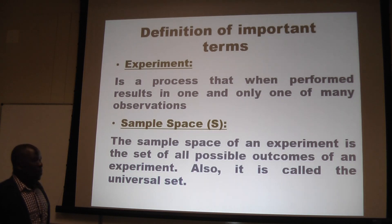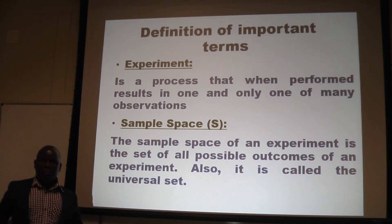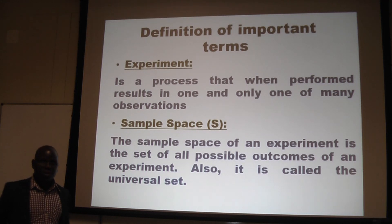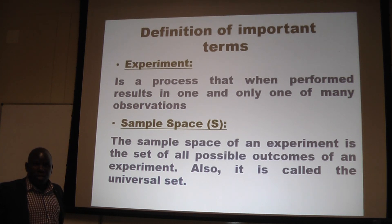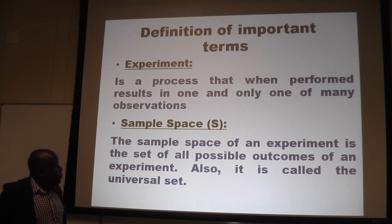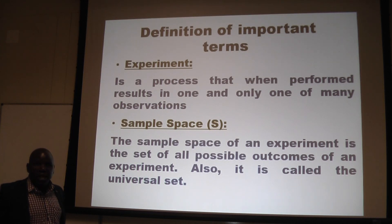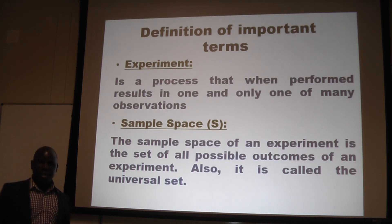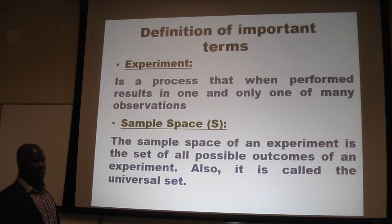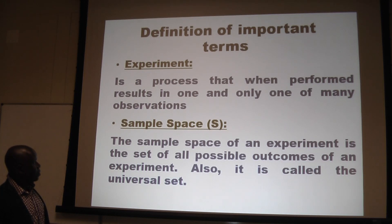What is the sample space? The totality of all possible outcomes of an experiment is what we refer to as a sample space, and it is sometimes referred to as a universal set. It is very important for us to appreciate the sample space of any given experiment, because it is the basis for which we are able to calculate probabilities, as you are going to see in the subsequent work in this tutorial.